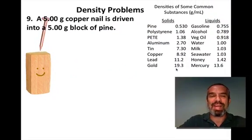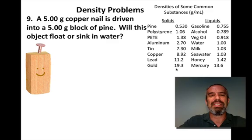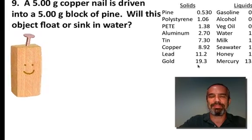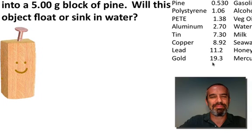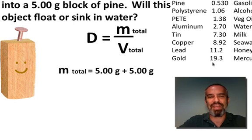Finally, last problem, number 9. A 5 gram copper nail is driven into a 5 gram block of pine. That looks painful. Will this object float or sink in water? Well, we know density is mass divided by volume. And I think we know that if it's a mixture of two different substances, we really want the total mass and the total volume. Well, the total mass is easy. If it's 5 grams of copper and 5 grams of pine, the total mass has to be 10 grams.